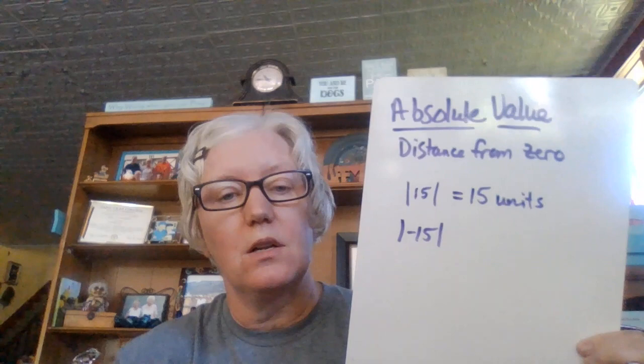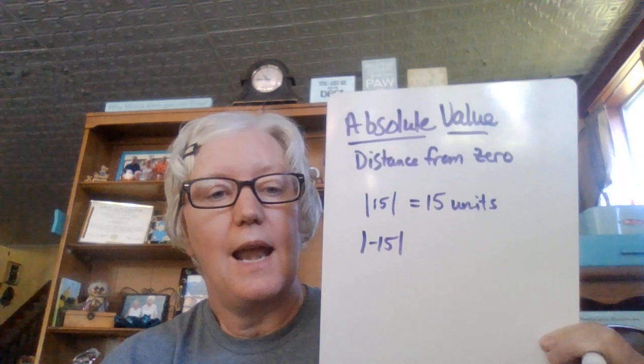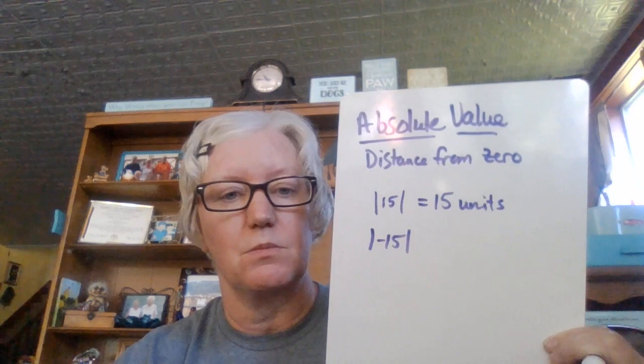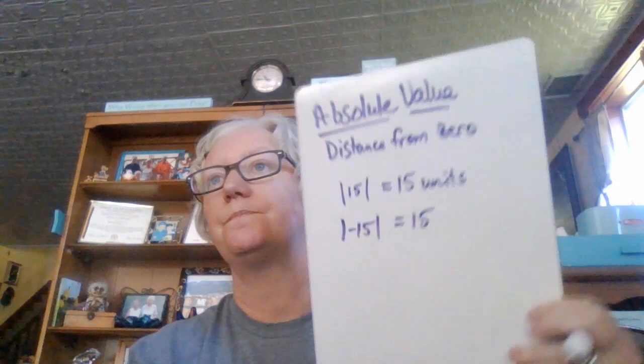Now, what if I said what is the absolute value of negative 15? Well then you're thinking how far away from zero is negative 15? It's also 15 units. It just happens to be on the other side of zero, but you don't say it's negative 15 units away. You just say it's 15 units to the left instead of 15 units to the right, just like saying my house is 10 miles from school versus negative 10 miles from school. That doesn't make any sense. So the absolute value of negative 15 is also 15.